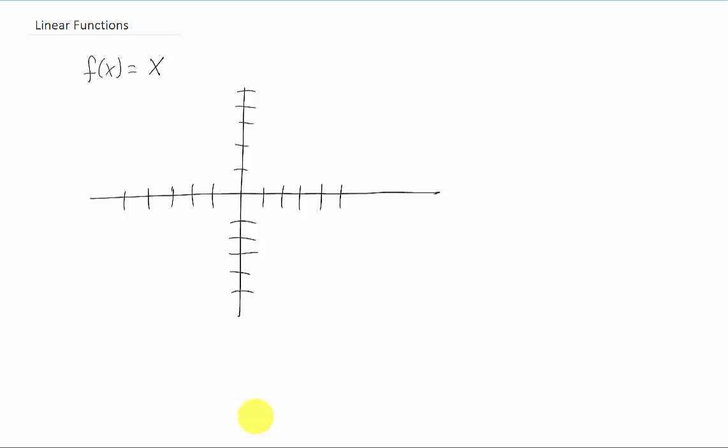We're going to start with the basic linear function, this line here, and we're going to investigate this basic linear function the same way we're going to investigate all future functions throughout the rest of this course. Let's start by looking at a graph. This is the basic 45 degree angled line that we also call y equals x.